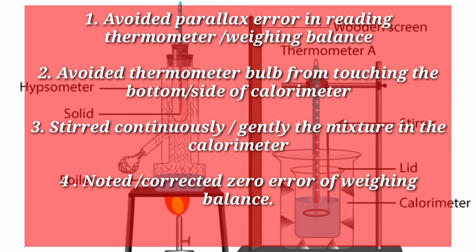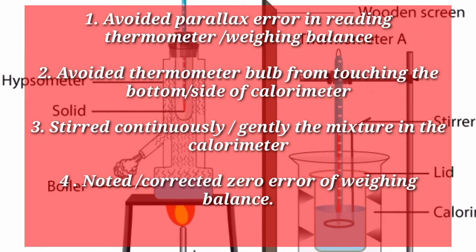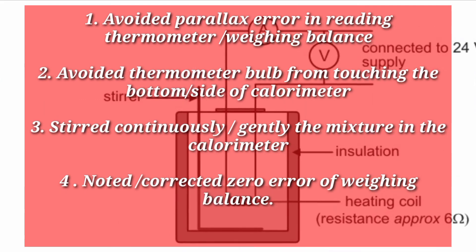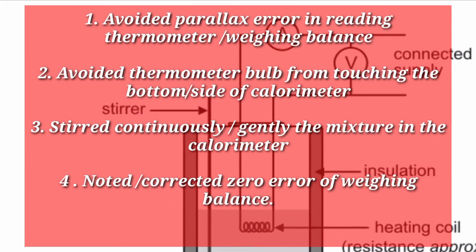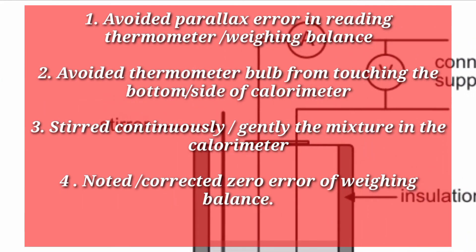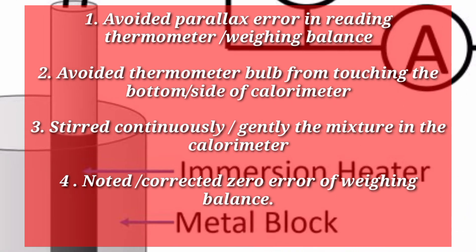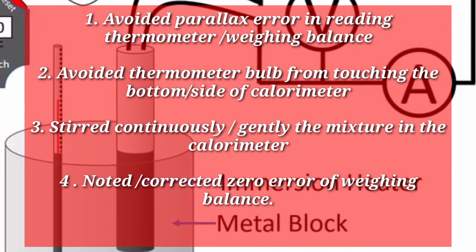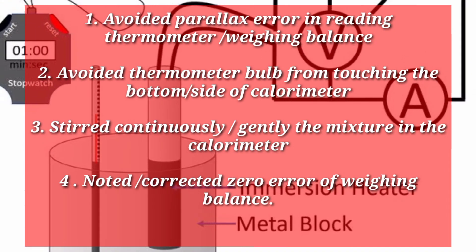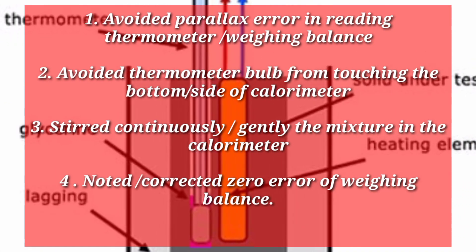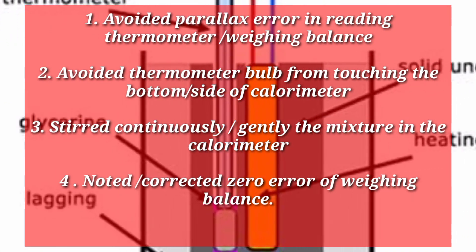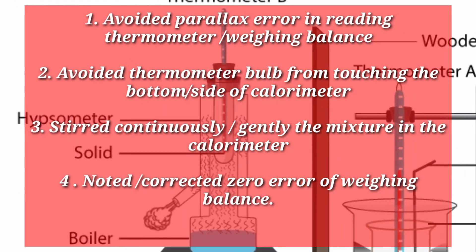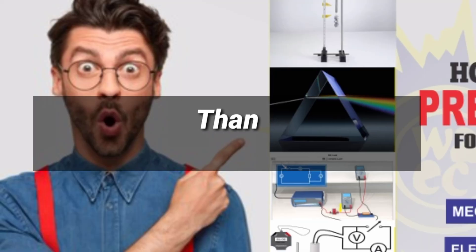1. Avoided parallax error in reading the thermometer or weighing balance. 2. Avoided the thermometer bulb from touching the bottom or side of the calorimeter. 3. Stirred the mixture in the calorimeter continuously and gently. 4. Noted and corrected the zero error of the weighing balance.